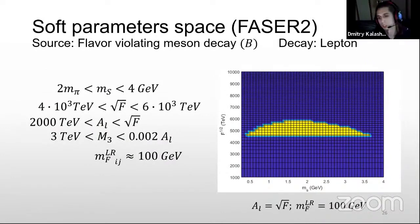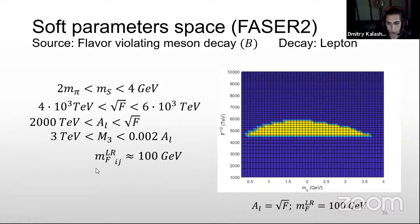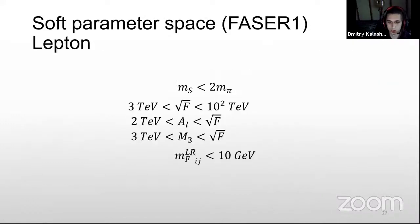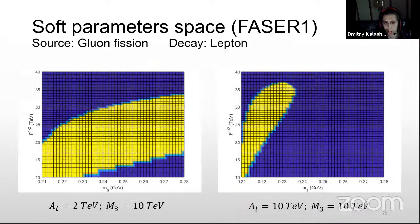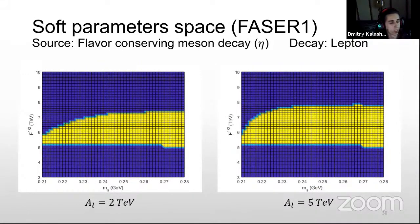In the area with masses bigger than two pion masses, it is also possible to find sgoldstino through lepton decay. Here you can see the soft parameter space where this can be done, but we have to take the trilinear soft parameter very large. For FASER 1, the situation is even worse — the soft parameter space is bounded at only 100 TeV, whereas in the photon case there would be almost 1000 TeV. Moving from FASER 2 to FASER 1, we simply get fewer sgoldstinos.